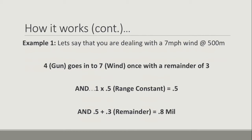So in the first example, we're running with a 7 mile-per-hour wind at 500 meters. Our gun number is 4. Four goes into 7 once with a remainder of 3. So because it goes in once, we do 1 multiplied by our range constant. For 500 meters it's 0.5. Then we take into account the remainder: 0.5 plus 0.3 for the remainder gives us 0.8 of a mil. If you're feeling confused, rewind and run it again — it should become self-explanatory once you get your head around it.